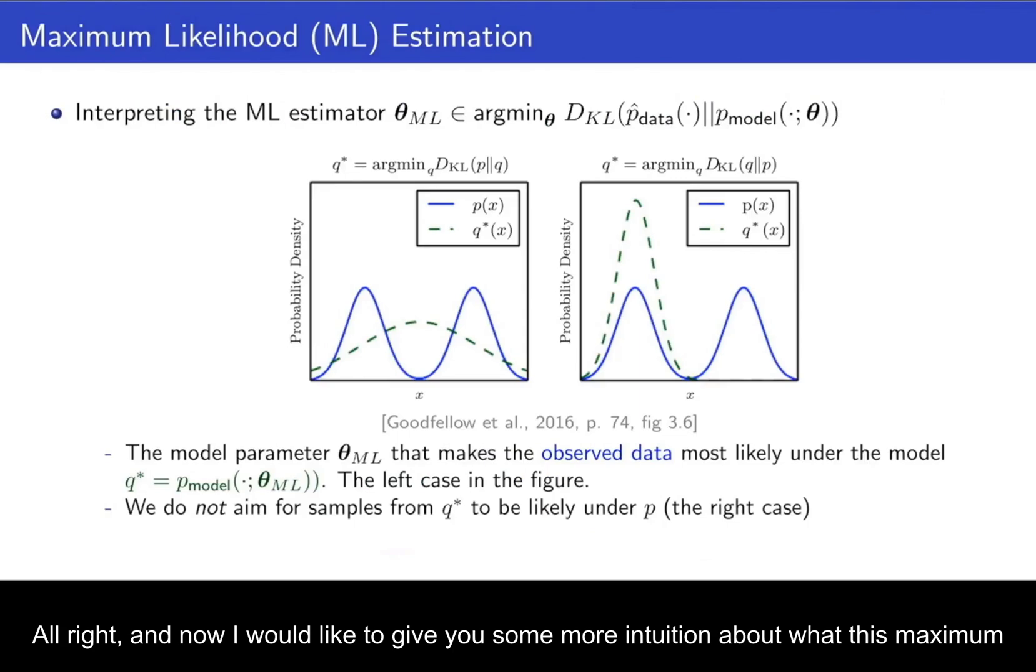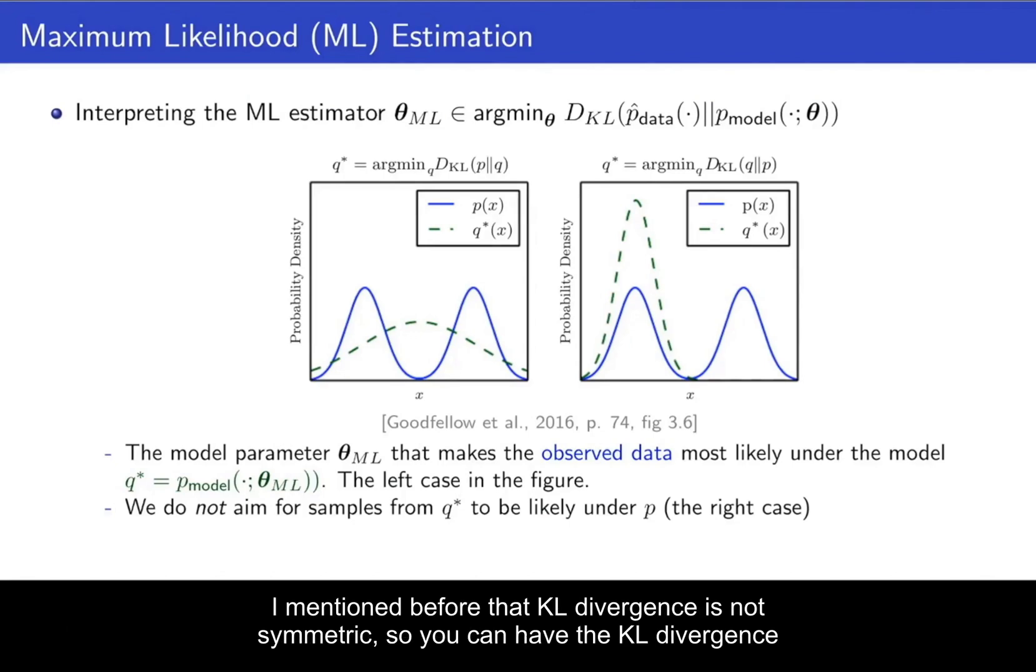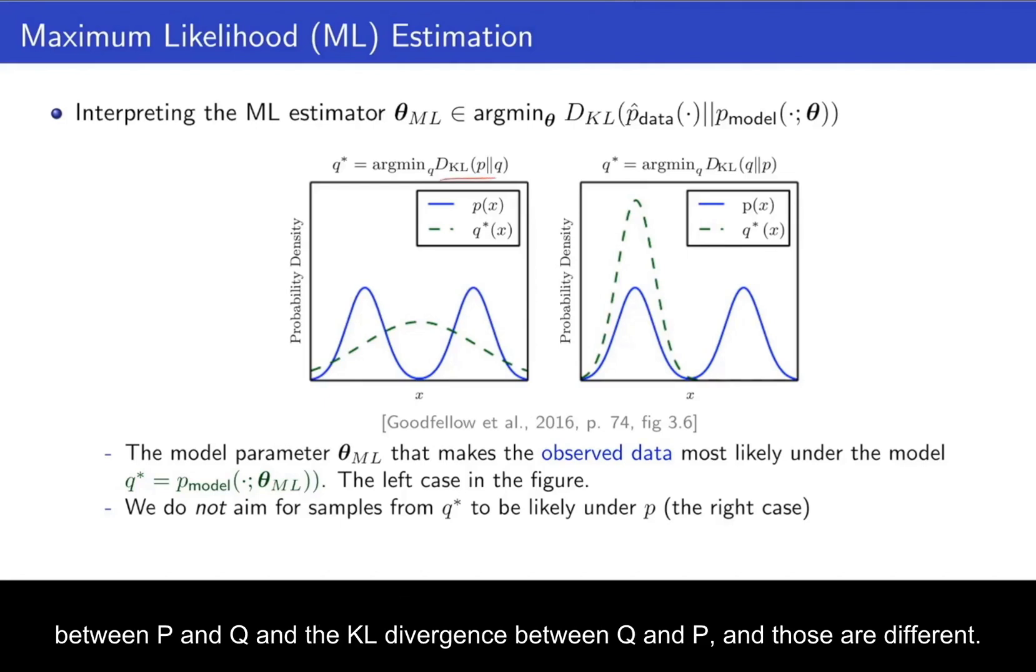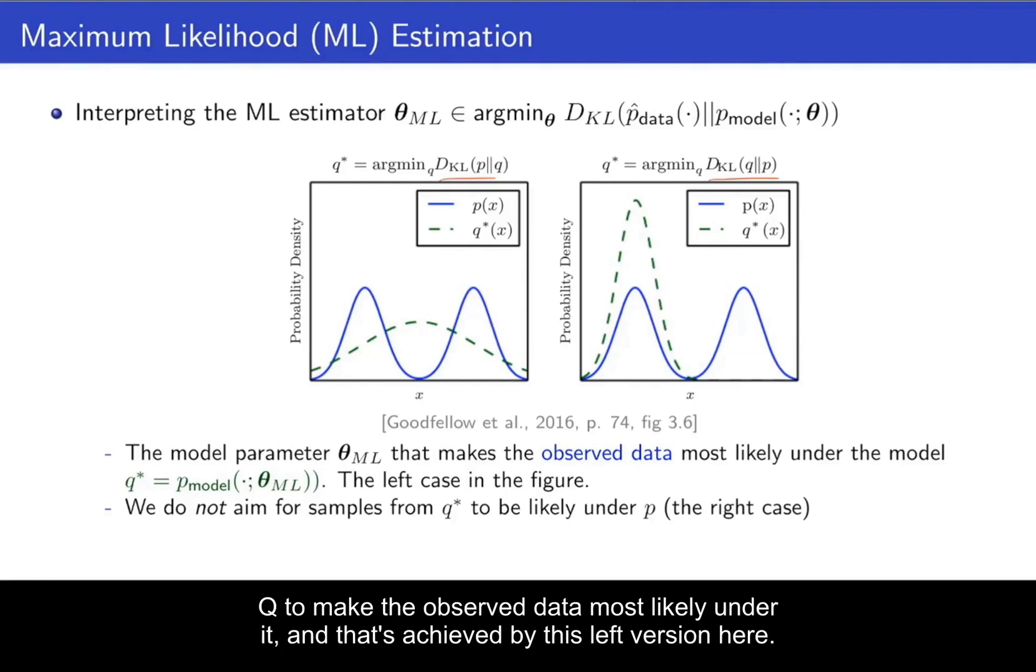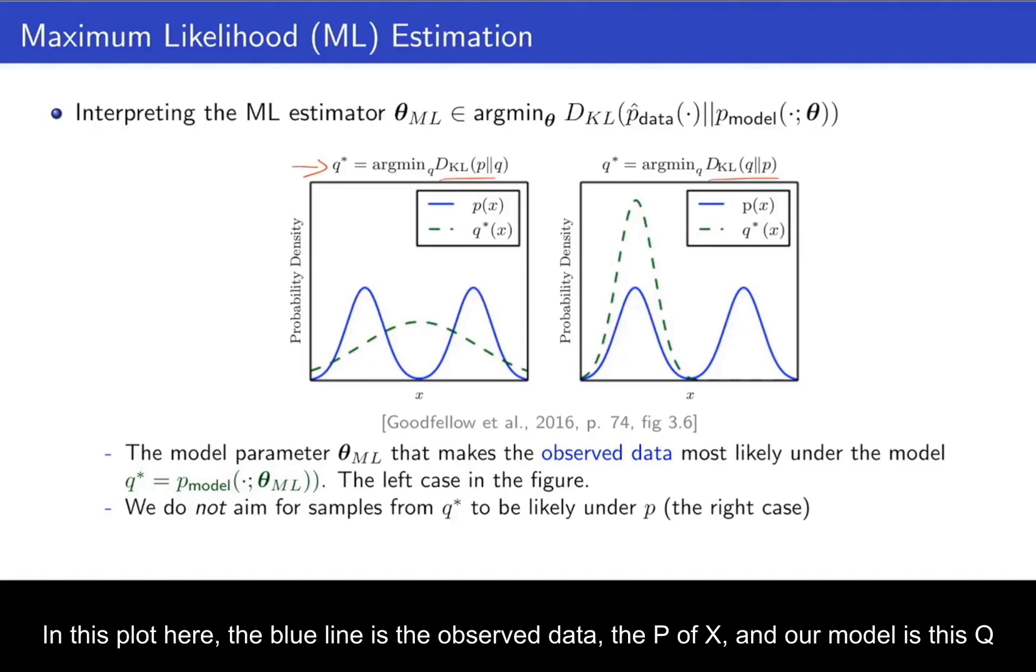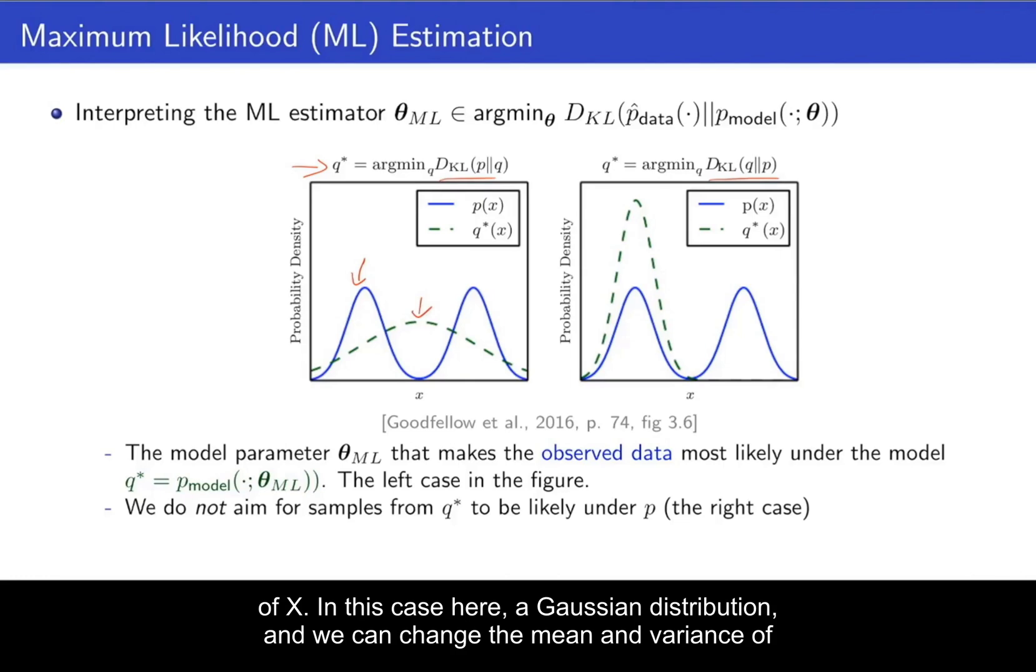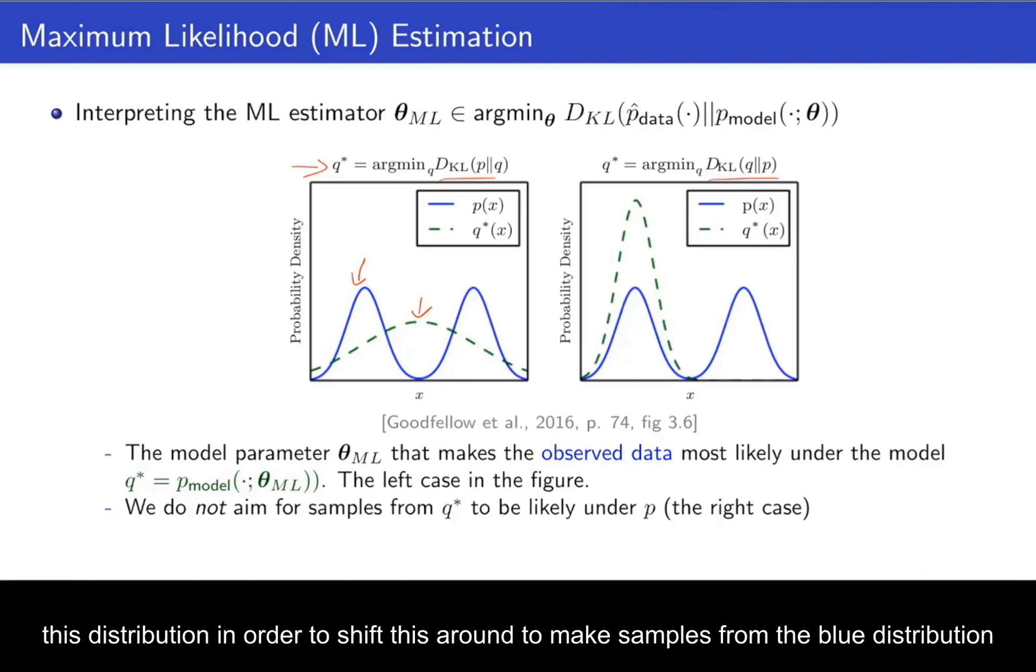Alright, and now I would like to give you some more intuition about what this maximum likelihood estimator is and how it relates to the two different versions of KL divergence. I mentioned before that KL divergence is not symmetric. So you can have the KL divergence between P and Q and the KL divergence between Q and P. And those are different. And what the maximum likelihood estimator tries to do, it tries to change our model Q to make the observed data most likely under it. And that's achieved by this left version here. In this plot here, the blue line is the observed data, the P(x). And our model is this Q(x). In this case here, a Gaussian distribution. And we can change the mean and variance of this distribution in order to shift this around to make samples from the blue distribution most likely under it. So the maximum likelihood estimator actually tries to fit all the data.